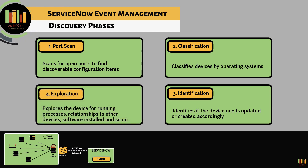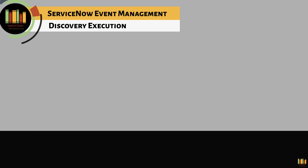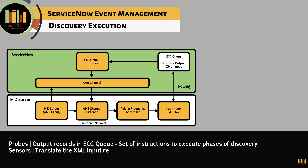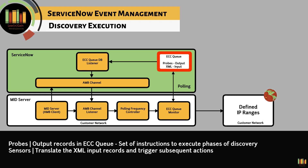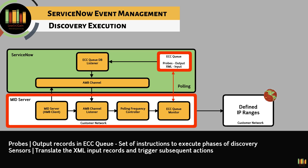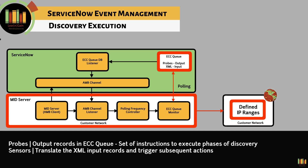Exploration explores the device for running processes, relationships to other devices, software installed, and so on. Discovery executes a series of probes. Probes are placed as output records on the ECC queue. The MID server downloads and executes the probes against all the target IPs. Horizontal discovery discovers all infrastructure devices within the provided IP range and further identifies, classifies, and populates the CMDB.